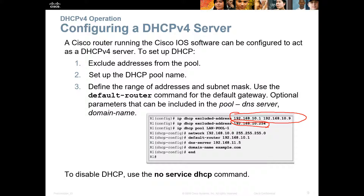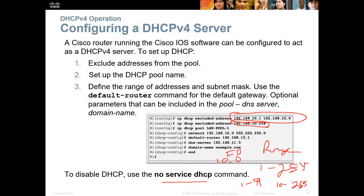We are excluding addresses 1 through 9 and also excluding 254, so between the network address and broadcast we will not use those specific addresses. Our usable range will be 10 through 253. If you want to disable DHCP, you can use the 'no service DHCP' command, and that will disable it.